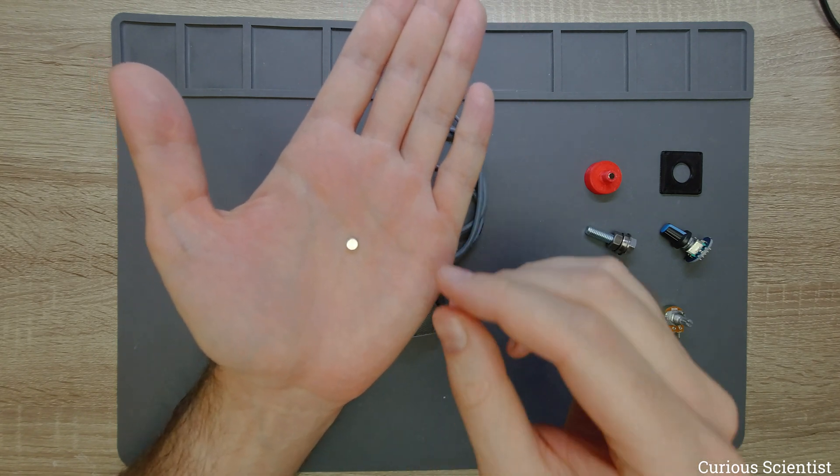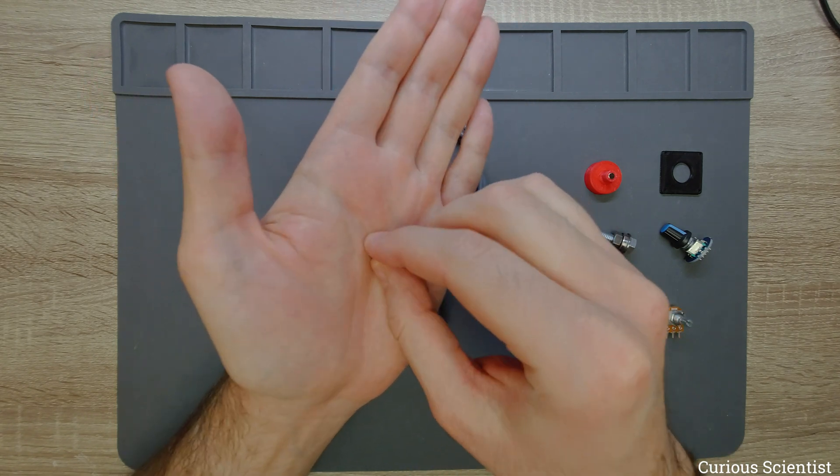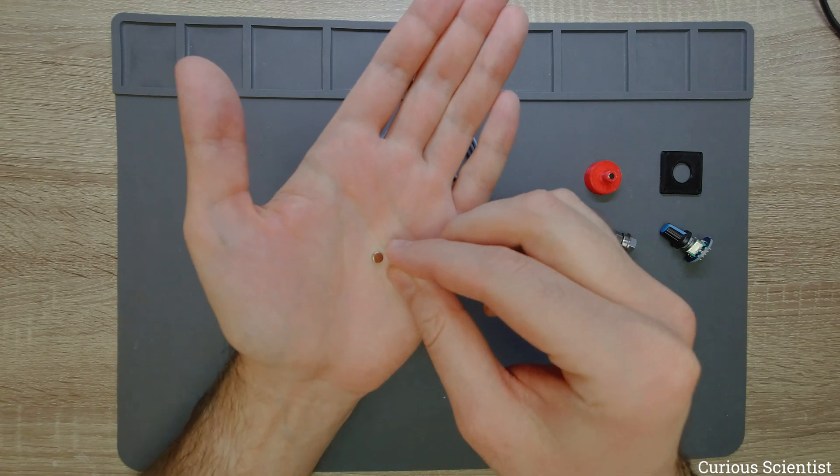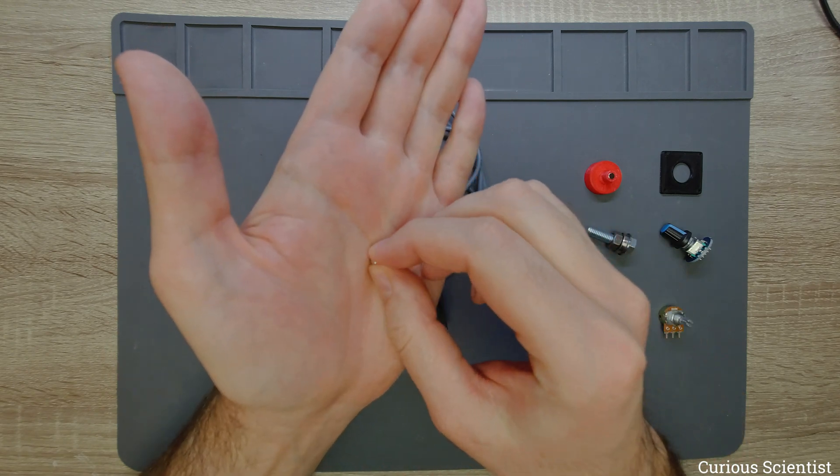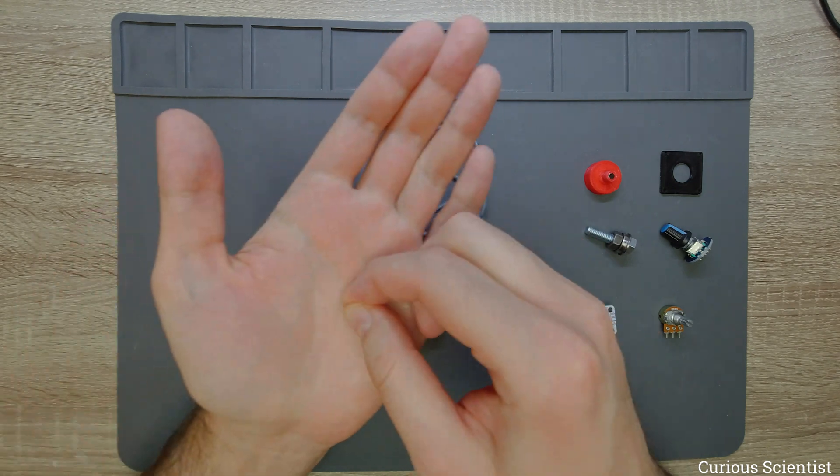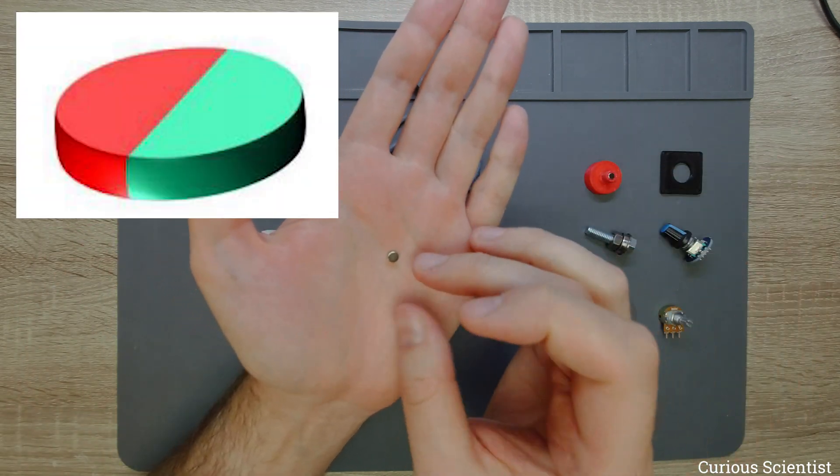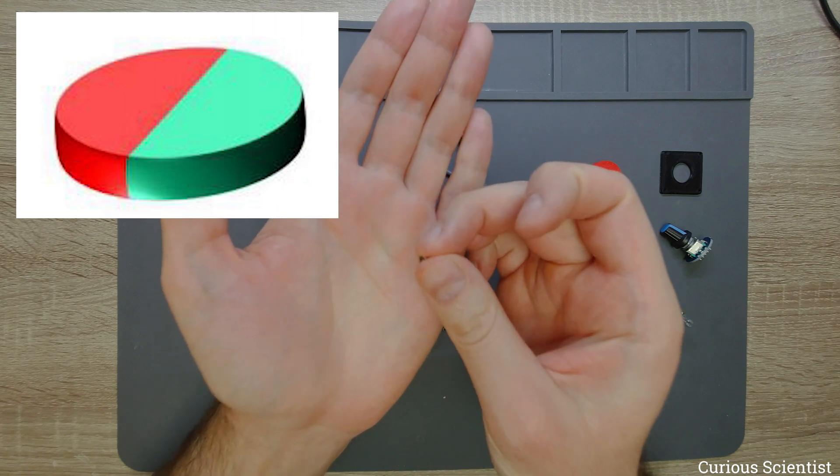And what this means is that the magnet doesn't have the north and south poles sticking out from the top and the bottom of the cylinder, but it is sticking out from the side of the magnet.